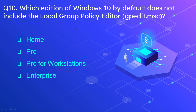Question number ten: which edition of Windows 10 by default does not include the Local Group Policy Editor? This Local Group Policy Editor can be accessed using gpedit.msc in the run window. The options are Home Edition, Pro Edition, Pro for Workstations, and Enterprise. The correct answer is the Home Edition. Windows 10 Home Edition is by far the edition which has the least features compared to all other Windows 10 editions.